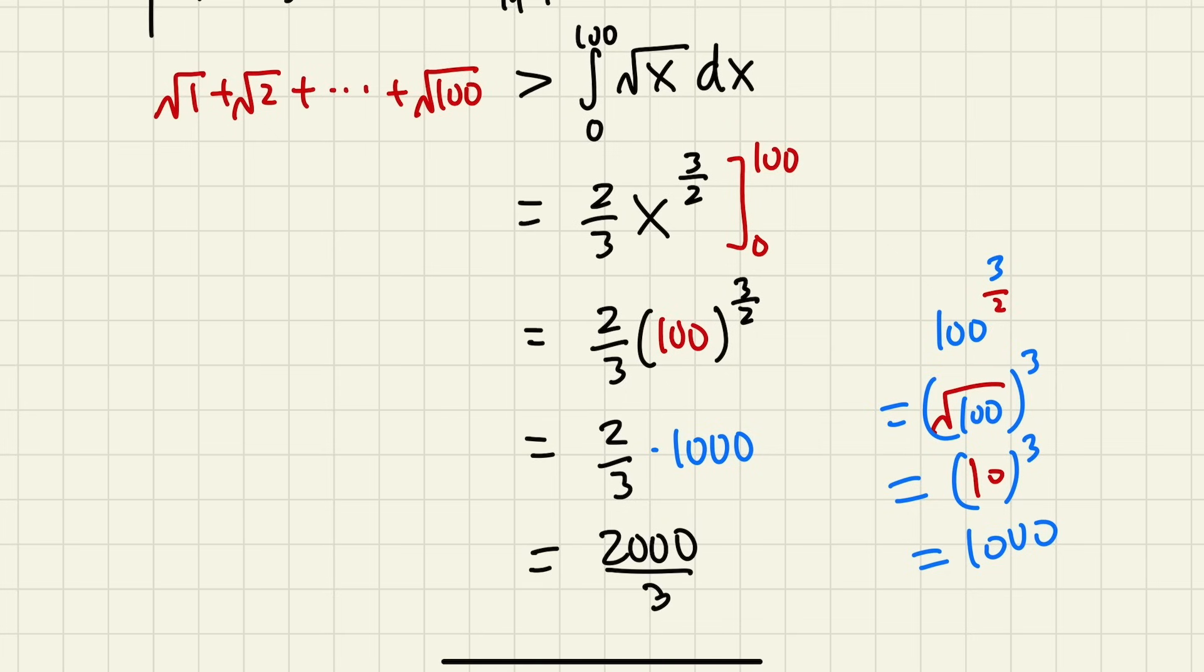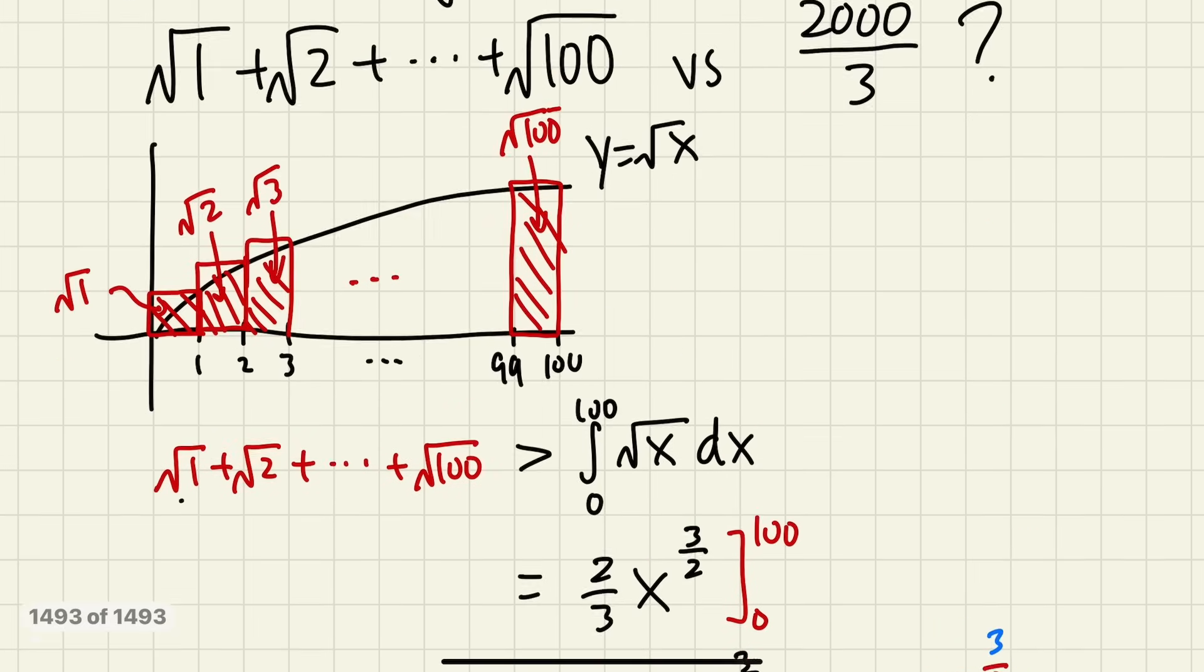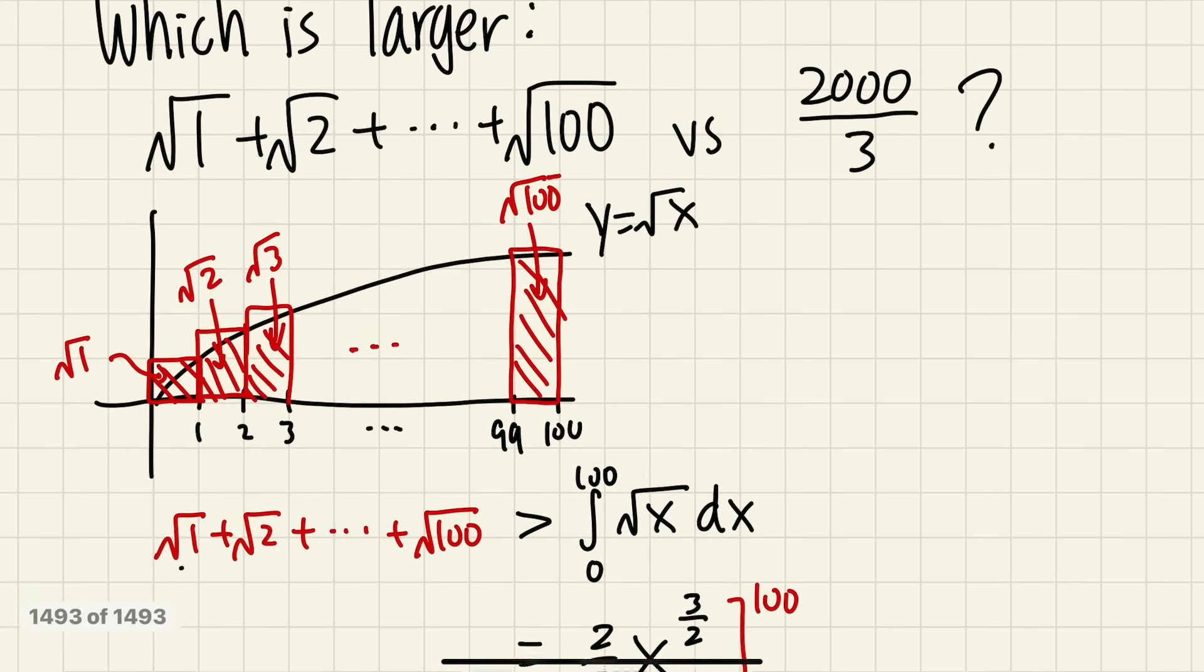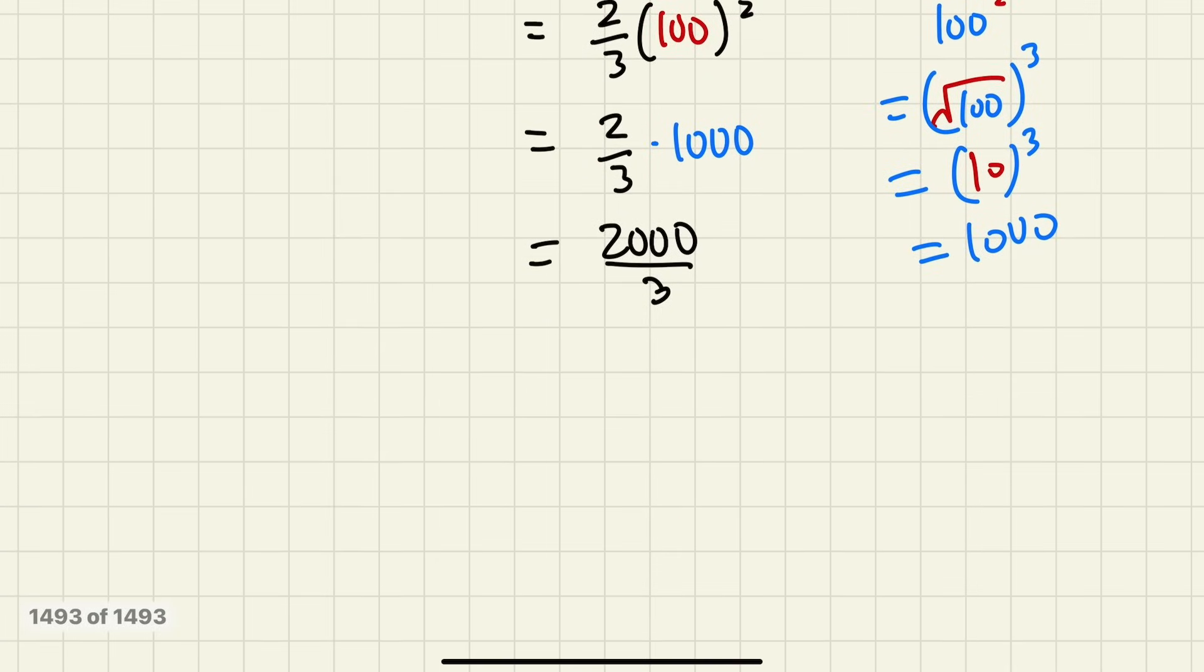That's exactly how I got 2000 over 3. So as you can see, the left-hand side is bigger than 2000 over 3 by the area argument.